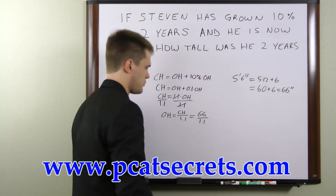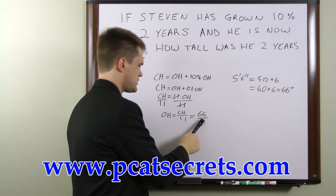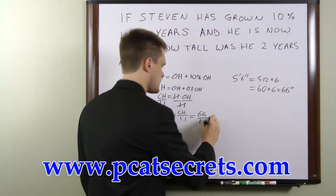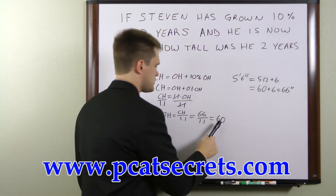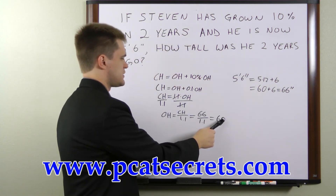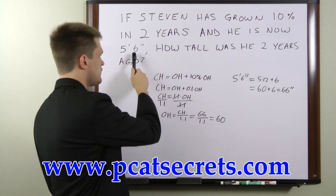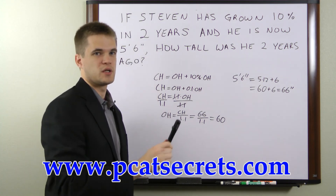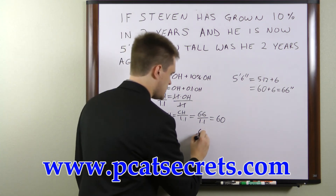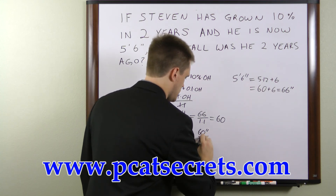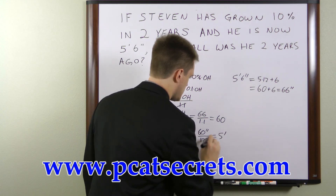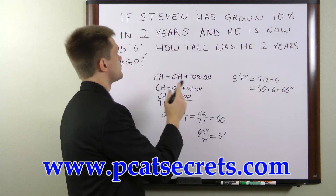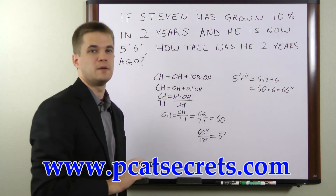66 over 1.1 — 66 divided by 1.1 is equal to 60. So Stephen's original height is 60 inches. But we had it given in feet and inches so we need to convert it back. 60 inches divided by 12 inches per foot gives us 5 feet with no remainder. So Stephen's original height was 5 feet.